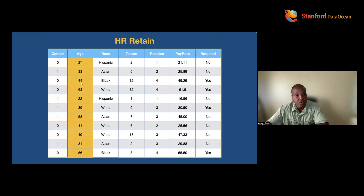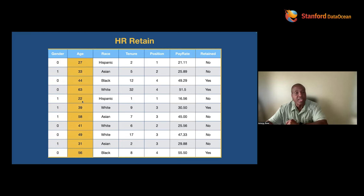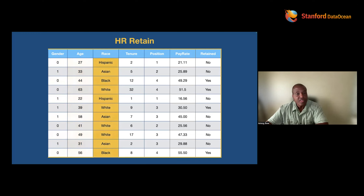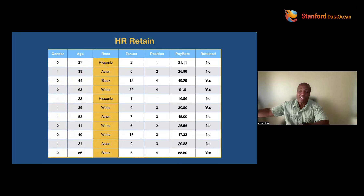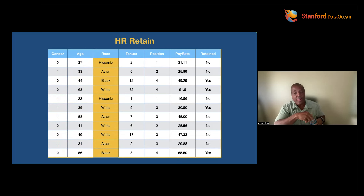What are we going to do about race? Here's what most people do: they arbitrarily or alphabetically give race numbers and say, machine, you have numbers — go do your thing. But here's the problem: machines think in terms of magnitude. The machine is going to say, oh, so this is the best race and this is the worst race in your world. We don't think of race as being ordinal.